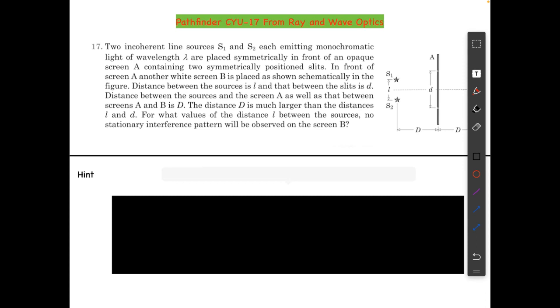The distance capital D is much larger than the distances small l and small d. For what values of the distance l between the sources will no stationary interference pattern be observed on screen B?